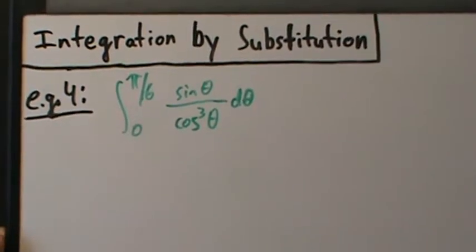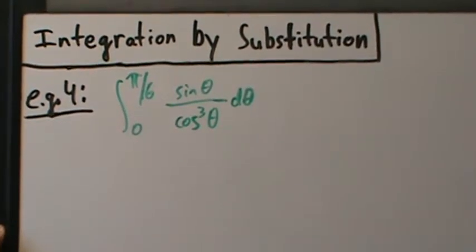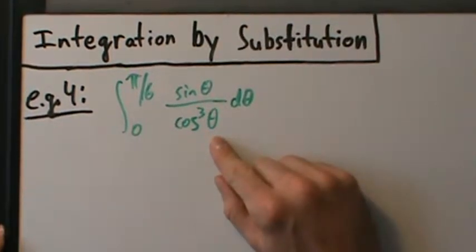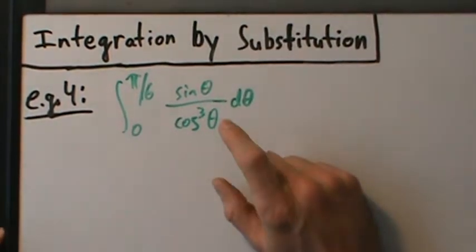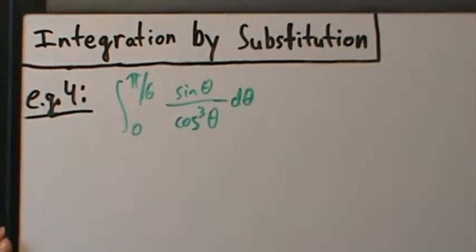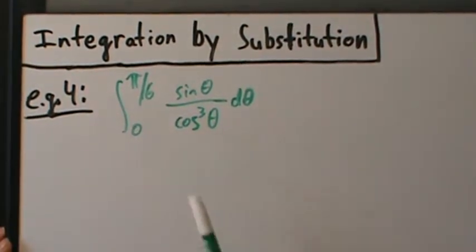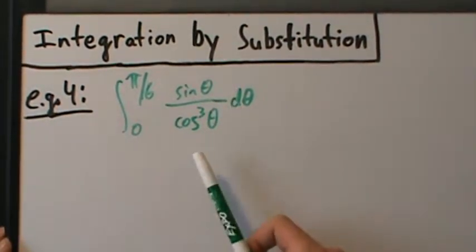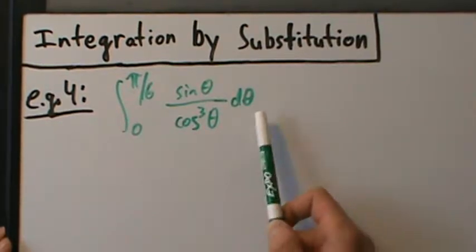Alright, here's example four with integration by substitution. With trig integrals like this, there might be a few different ways to approach it, but we'll keep it simple and stick with substitution. The integral is from zero to pi over six of sine of theta divided by cosine cubed of theta, d theta.